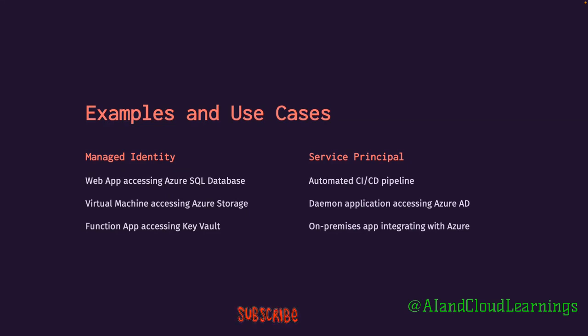Another use case is a function app accessing Key Vault. Key Vault stores secrets like passwords and certificates. Managed identity is helpful when one resource — whether a web app, VM, or anything else — needs to access another resource within the Azure platform. Remember, there are two types: system-assigned and user-assigned managed identity.